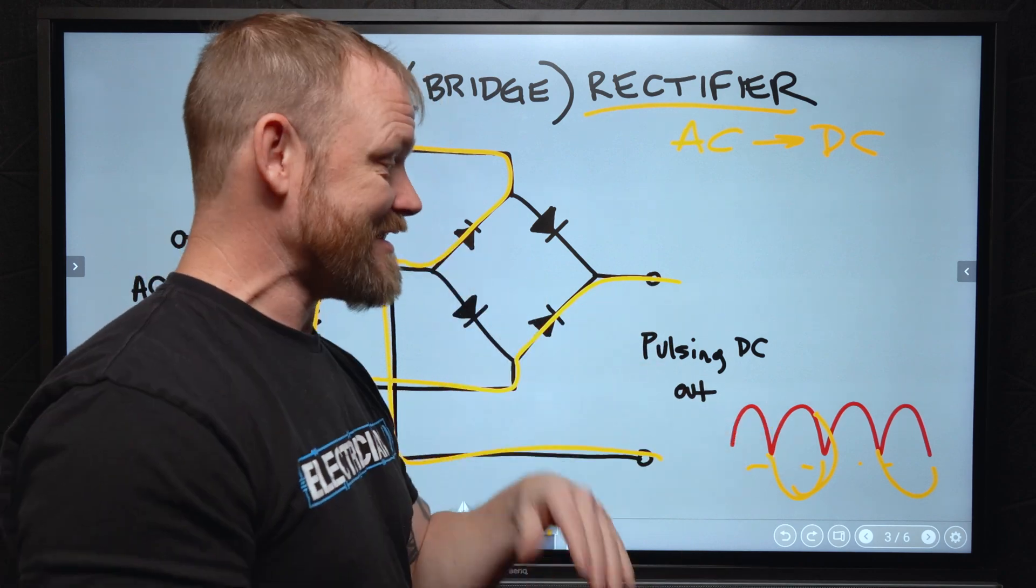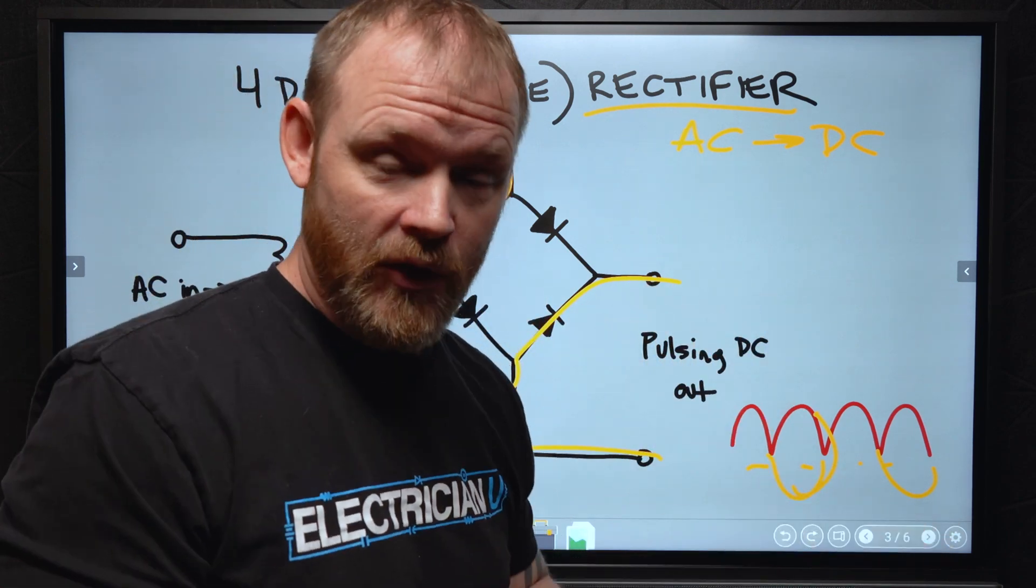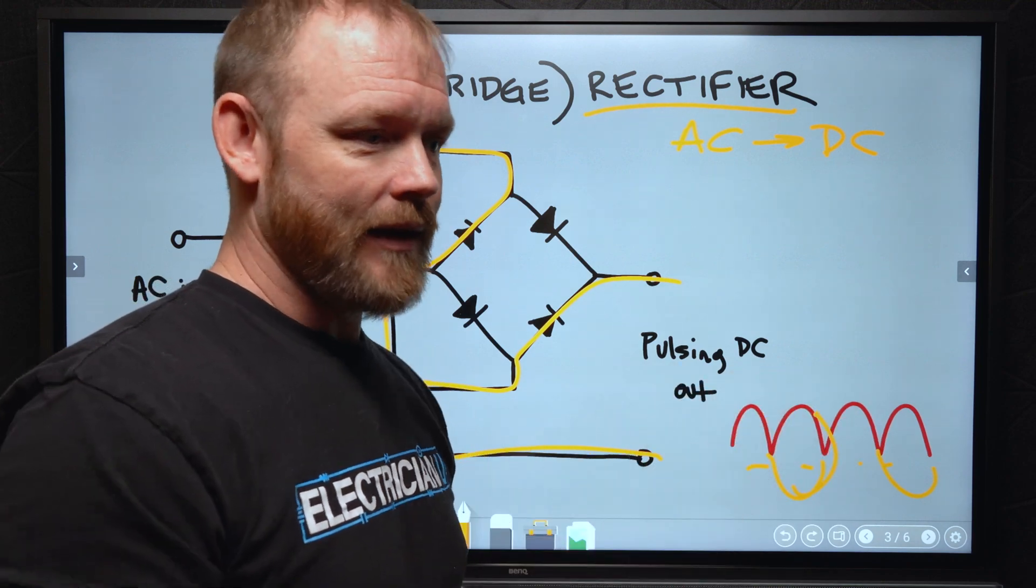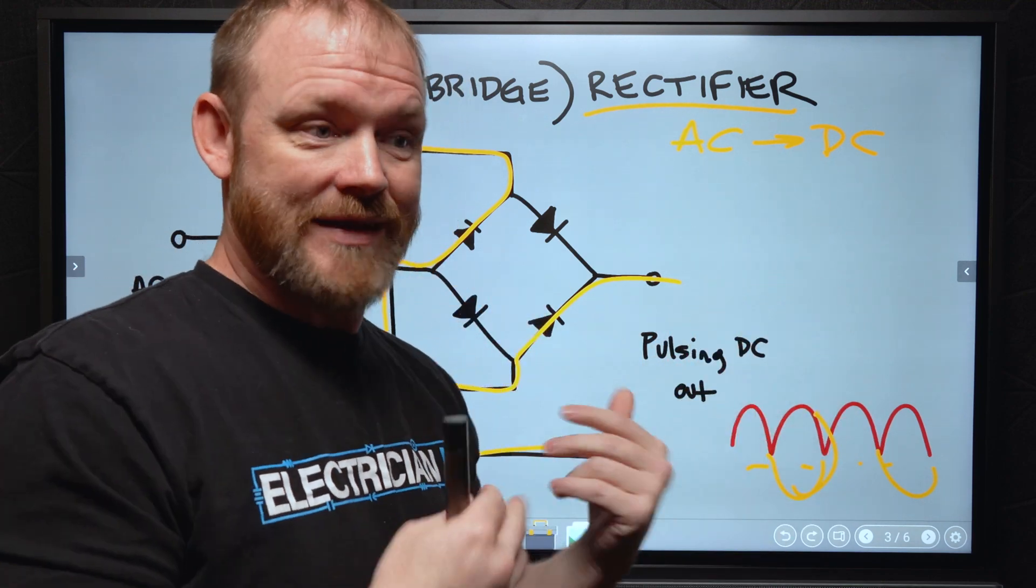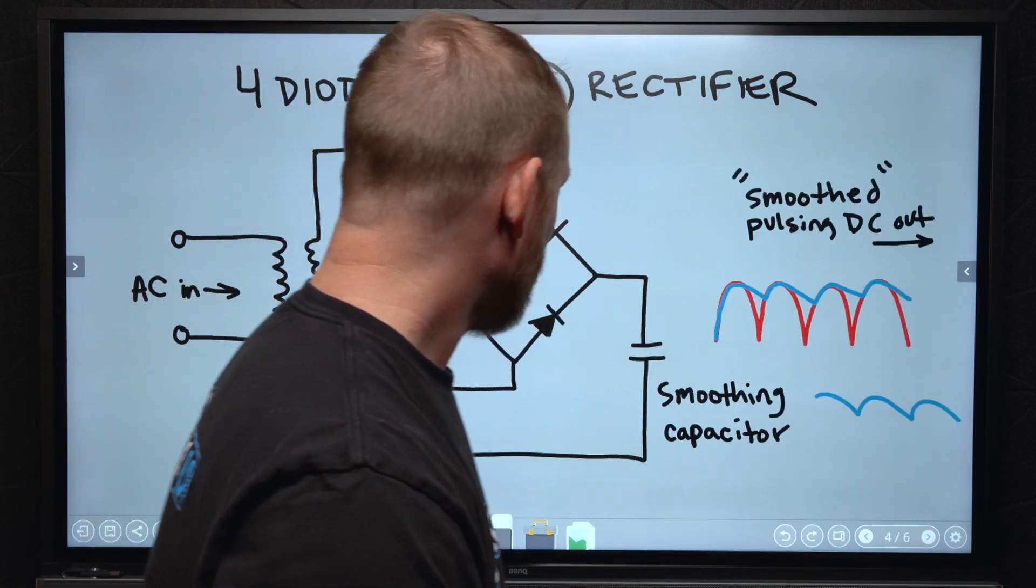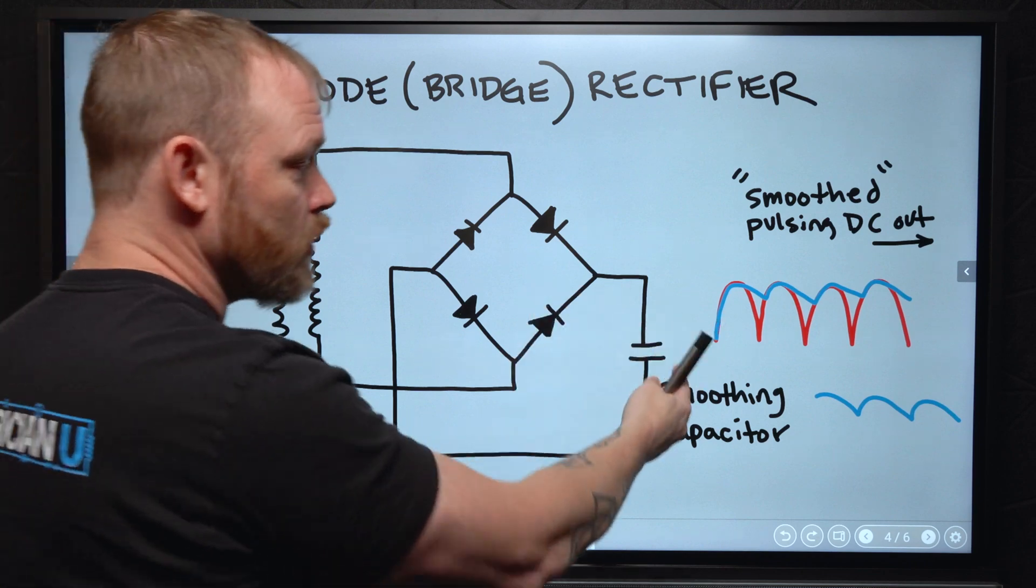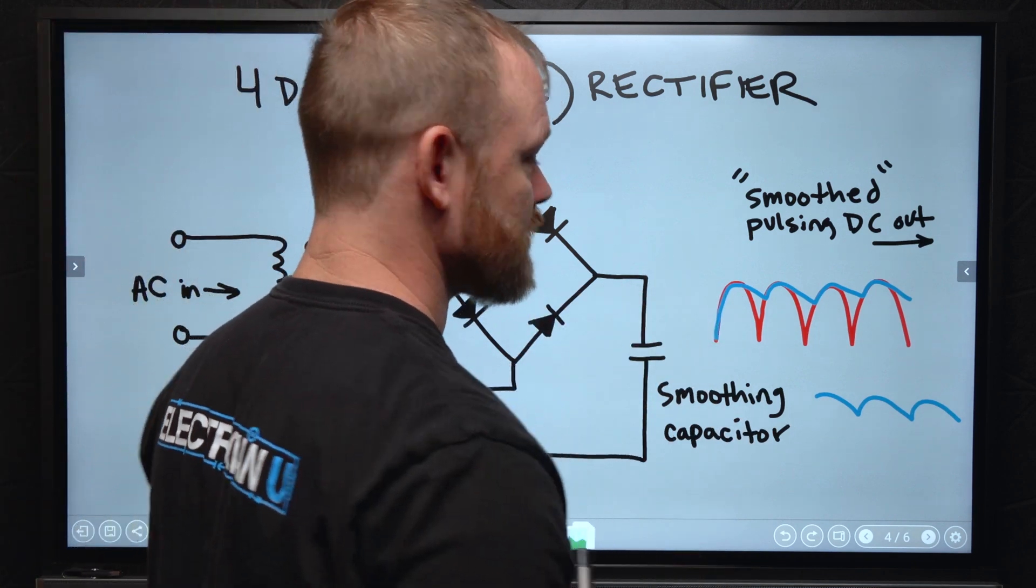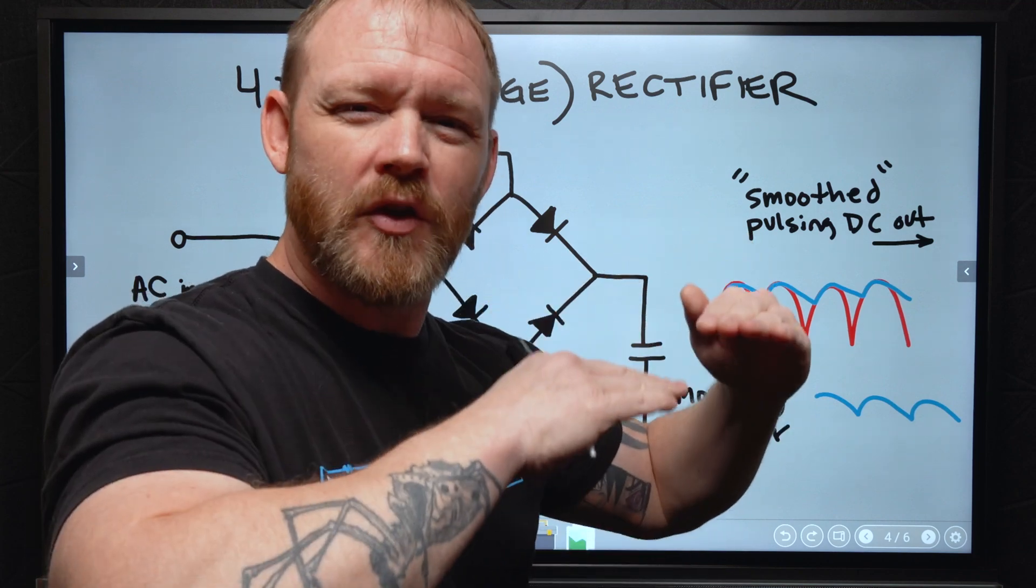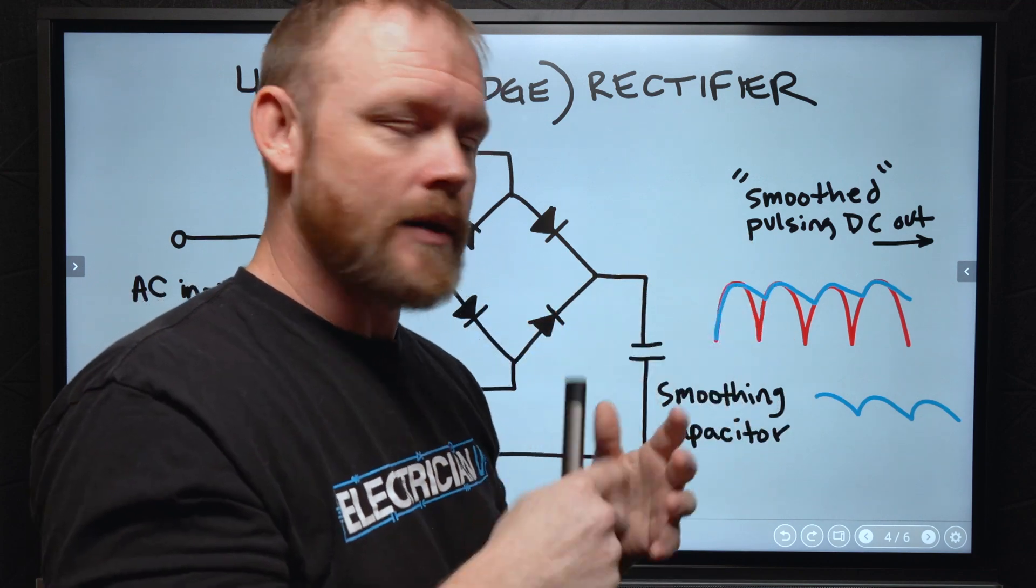But like I said, pulsing DC, that's not good enough for all these small devices. If you try to hook your phone up to that signal, it's not going to charge. It probably could damage it or it could just not charge and recognize a smooth enough signal. So what we do is we add another component. In this case, it'd be a smoothing capacitor. This is kind of the easiest way to achieve some sort of smoothing or filtering of that pulsing DC that's coming out.